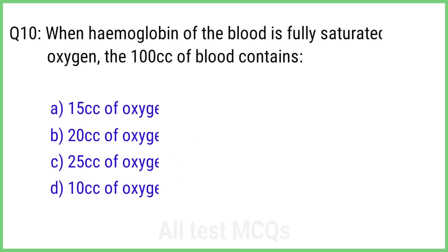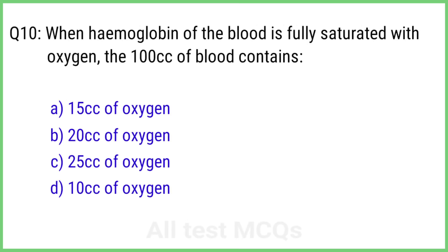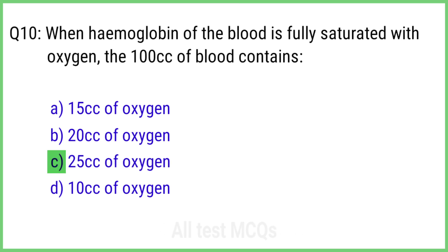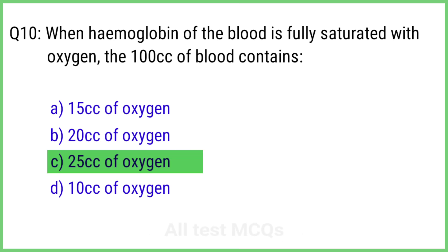Question 10. When hemoglobin of the blood is fully saturated with oxygen, the 100 cc of blood contains? The right answer is option C: 25 cc of oxygen.